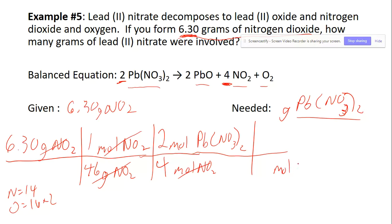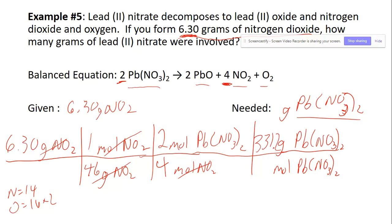Now we go from moles of Pb(NO₃)₂ to grams of Pb(NO₃)₂. Adding lead plus nitrogen times 2 plus oxygen times 6 gives 331.2 grams per one mole. Multiplying the tops — 6.3 times 1 times 2 times 331.2 — and dividing by the bottoms — 46 times 4 — gives 22.7 grams of Pb(NO₃)₂ as the final answer.